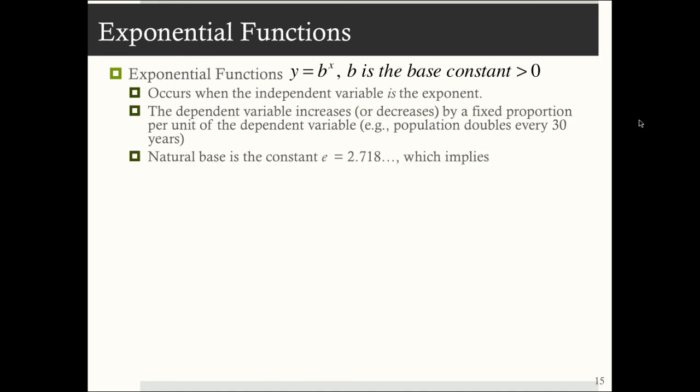With exponential functions, the dependent variable increases or decreases by a fixed proportion per unit of the dependent variable. So whenever you hear population or income doubles every x amount of years, that statement is based off of using an exponential function. Now normally you'll see exponential functions with a natural base, that constant e. Constant e is 2.718 and so on, which implies that we have an exponential function, or the natural exponential function, y is equal to e to the x. So remember, these b's, this e, they're constants, they're just some number.